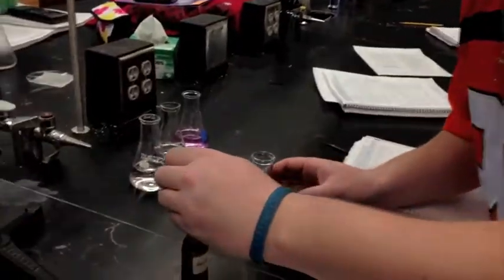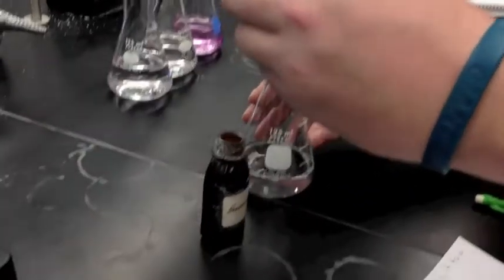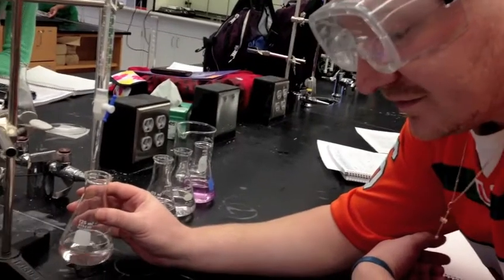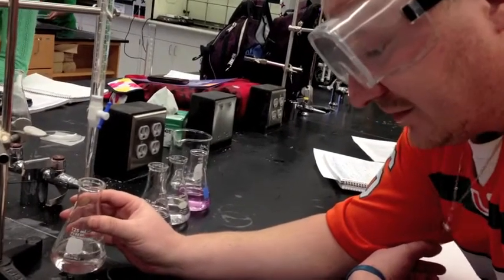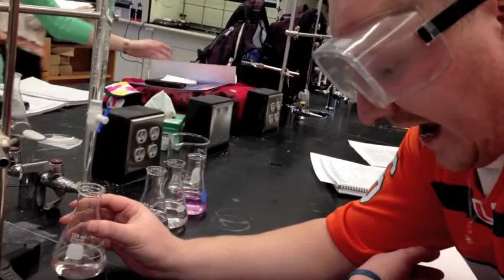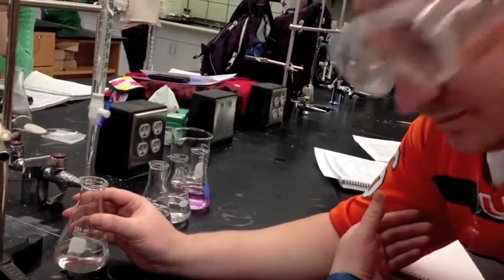We're going to take one drop of phenolphthalein and place it into the KHV. Titration is the process of determining the concentration of a substance in a solution by adding a standard reagent of known concentration.